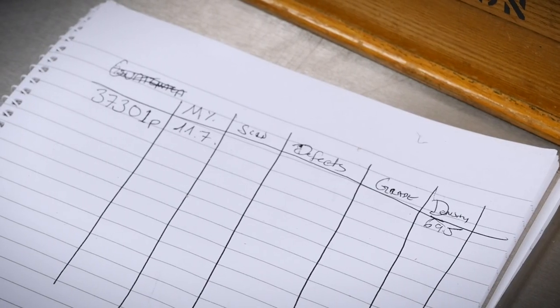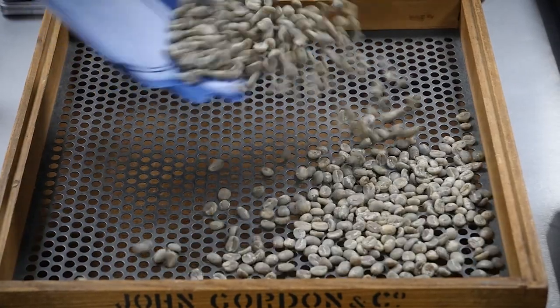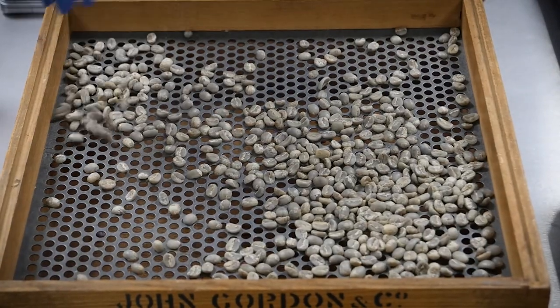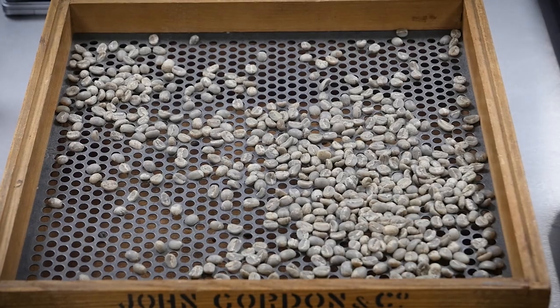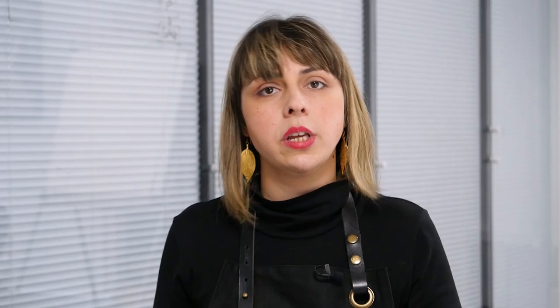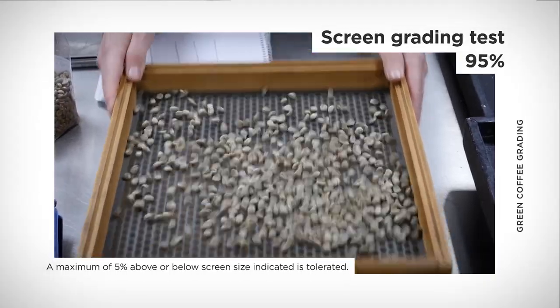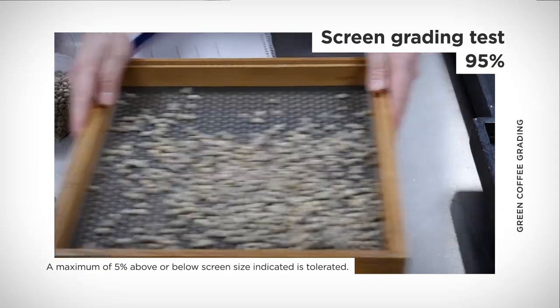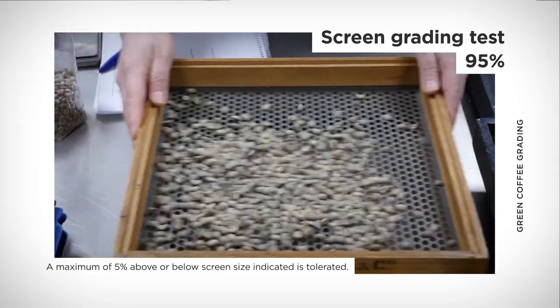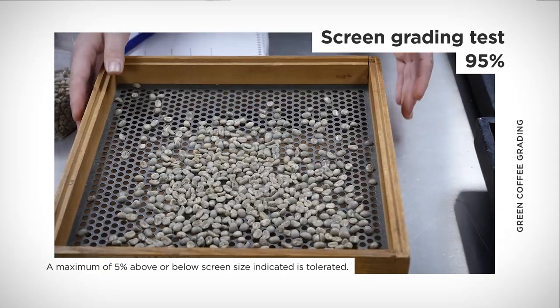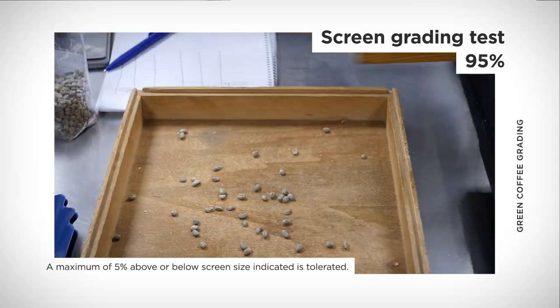I will then proceed on to the screen grading. I'll take a sample of that coffee and shake it through these screens, which allow only beans smaller than that size to fall through. As long as 95% of the beans are of that size, the coffee passes the screen grading test.